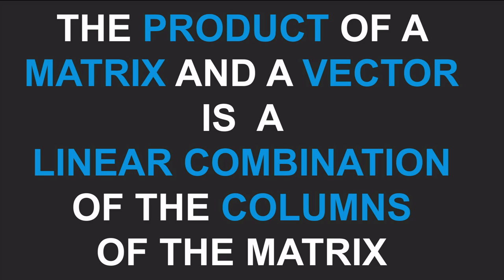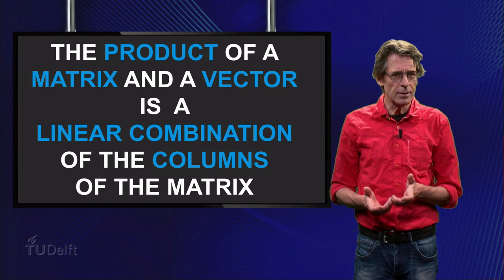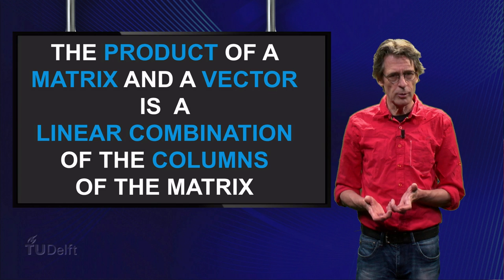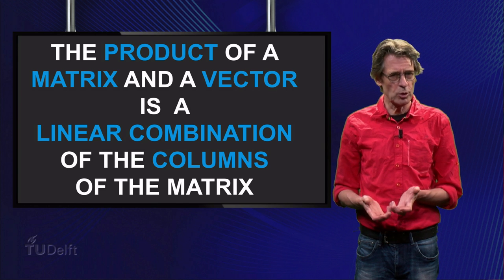The product of a matrix and a vector is a linear combination of the columns of the matrix. Here the matrix is just a block of numbers without any interpretation whatsoever.